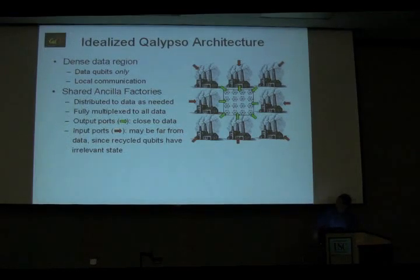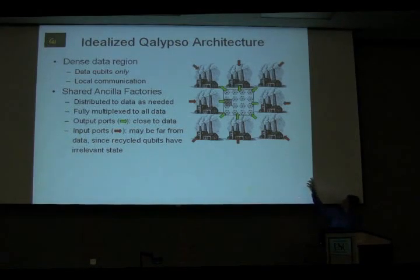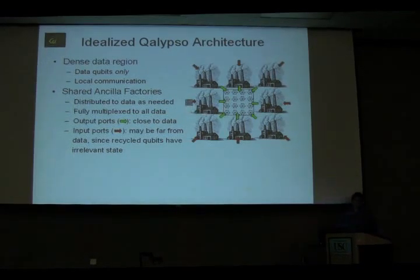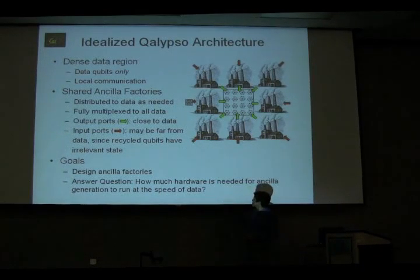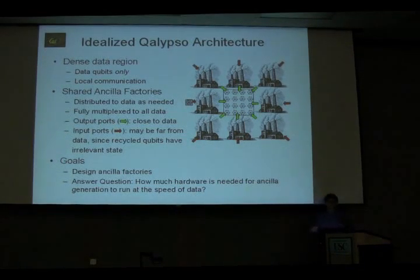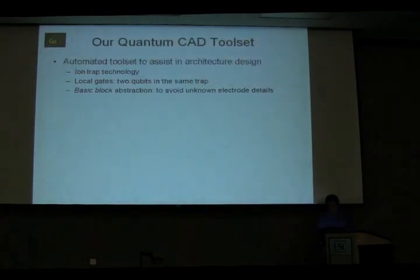Since we're designing the ancilla factories anyway, let's design them to have output ports physically close to the data, so once we have our good encoded ancilla, they don't have to move too far — low movement decoherence. Meanwhile, the input ports of an ancilla factory are just junk qubits with irrelevant or undefined state, so they can be far away from the data. For example, that middle-left ancilla factory generates an encoded zero ancilla that only needs to move a short distance into the data.